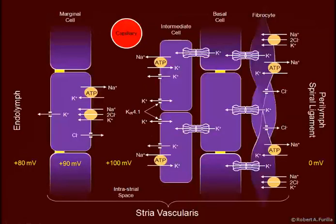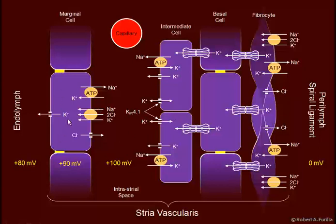We need a multi-cell model. Here we can see the perilymph, a spiral ligament, fibrocytes, then basal cells, intermediate cells, and on this side marginal cells. We're moving potassium constantly through these cells. There are lots of gap junctions between these cells, allowing potassium to move through to the basal cell. Then we have the sodium-potassium pump and potassium channels. Potassium moves into the intrastrial space and then moves in this direction. Some potassium can cycle back in and out again, but the net movement is in one direction. Potassium is not allowed to move back, so we get very low potassium in the intrastrial space.